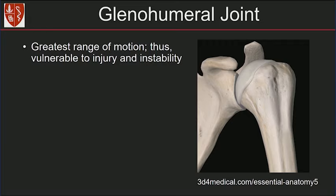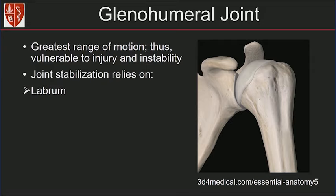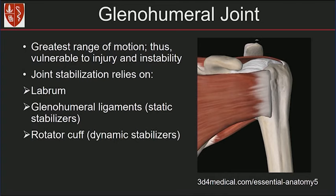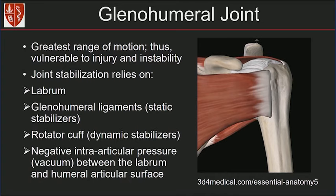The glenohumeral joint has the greatest range of motion, so it's vulnerable to injury and instability. Joint stabilization relies on the labrum, the glenohumeral ligaments, rotator cuff, and the negative intra-articular pressure.